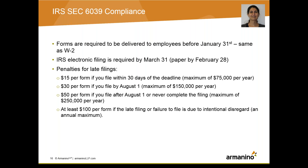Employee statements for both forms are due by January 31st of next year — no changes from last year. Company filings are due either February 28th for paper files or March 31st for electronic filings. Penalties for late filings: $15 per form if you file within 30 days of the deadline with a maximum of $75,000 per year; $30 per form if you file by August 1st with a maximum of $150,000; and $50 after August 1st with higher maximums. So it's good to have your planning in place starting now.